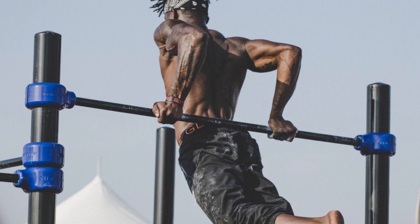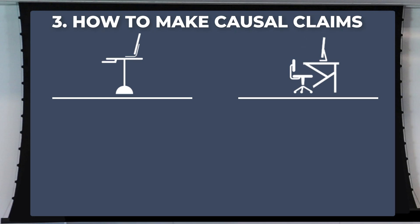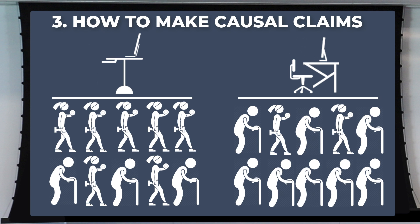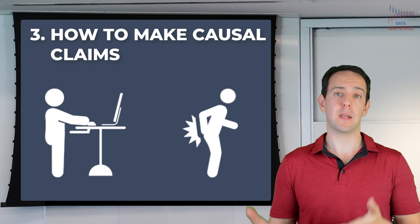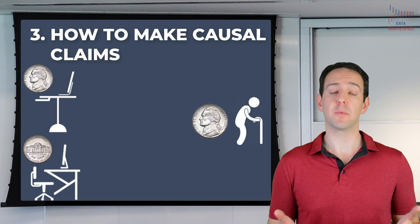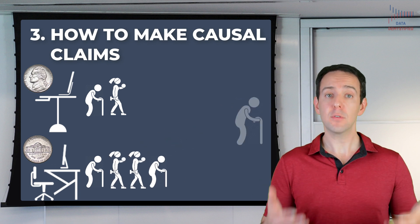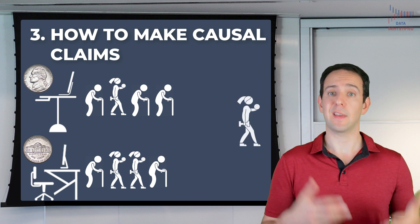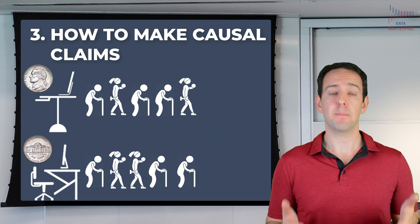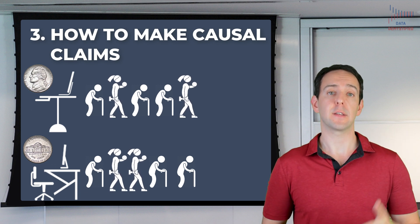Let's see why this works. Imagine we have people who differ on only two possible dimensions: their age and their physical fitness. In the real world, people obviously differ on a whole lot more, but let's keep this example simple. Let's also assume that younger and fitter people have less lower back pain than older and less fit people. If I gather up 20 people and ask if they have standing desks, I might find that the people who tend to have standing desks are also younger and fitter, which we already said is a problem for making causal statements. So instead, what I do is find a group of people who don't have standing desks already and then randomly assign them to either have a standing desk or not.